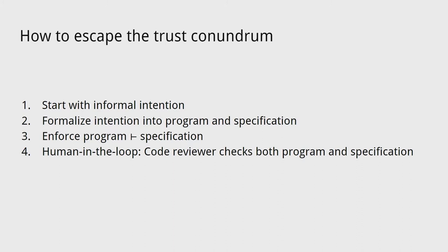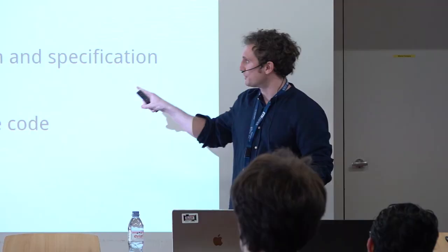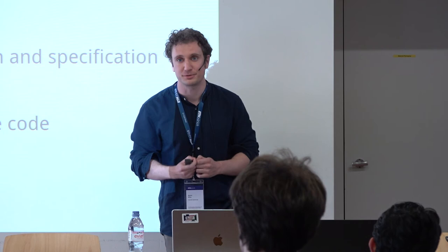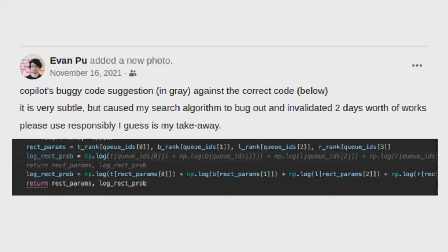There's one last thing to add: we want the system to know its own limitations. In classic program synthesis, the synthesizer might say it can't figure out a solution. But with neural networks, if you give them any problem, they'll give you an answer no matter what. We would like neural networks that can actually say 'I don't know how to solve this problem.' If we do this, we can avoid situations like the bug story mentioned earlier.